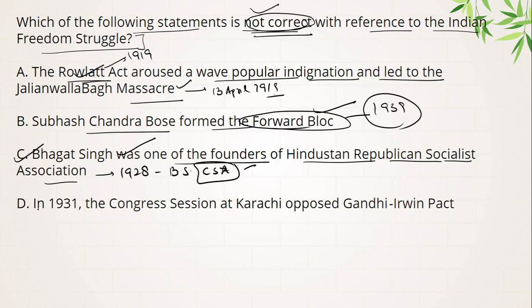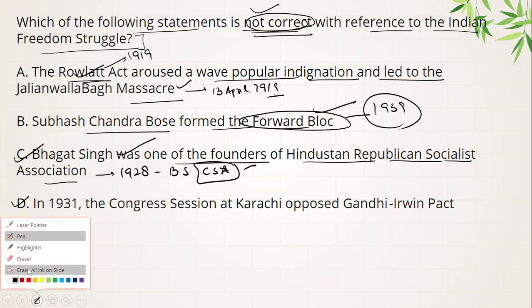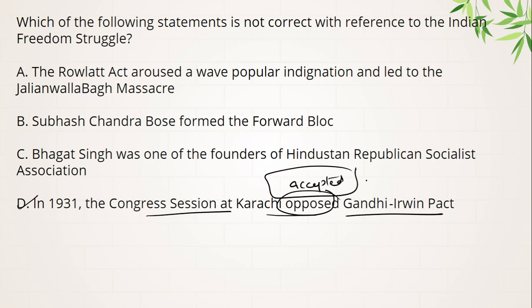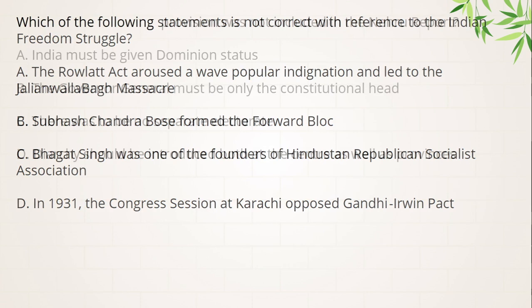The wrong statement among all is option D. The Congress session at Karachi did not oppose — it actually accepted the Gandhi-Irwin Pact. The Gandhi-Irwin Pact was signed on 5th March 1931 and was endorsed and accepted at the Karachi session. Dhyan rakhiye ga.